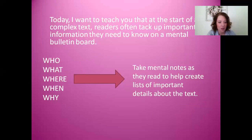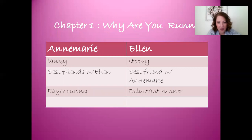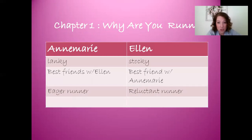Let's stop there. I'm starting to make those mental notes in my head about the who — the characters in my text. As I was reading this for the first time, I made some notes. I looked at Anne Marie and Ellen, the two characters I'm first introduced to. Anne Marie is described as lanky, is best friends with Ellen, and I can tell she's an eager runner. Ellen is quite different — stocky, best friends with Anne Marie, and a little more reluctant of a runner. These are things I think are going to be important to note as I continue reading. So I tack them up on my mental bulletin board, and I also jotted them down in my reading notebook because I might want to add to these later. Kind of like boxes and bullets we've used in other units — you could make one of those for your characters, the setting, the problems, keeping notes as you learn things along this journey.